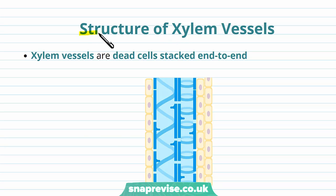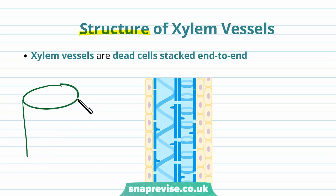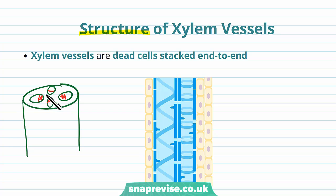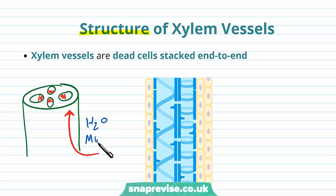First of all let's talk about the structure and the overall layout of the xylem vessels. Xylem vessels are part of the vascular bundle found in the stems and the different tubes of the plant which transport water and minerals. Taking a cross section of a stem, we've got vascular bundles which line the outer edge of the stem, and on the inside of each vascular bundle we've got the xylem vessels, which collectively make a tissue called the xylem that transports water and minerals up from the roots to the rest of the plant.